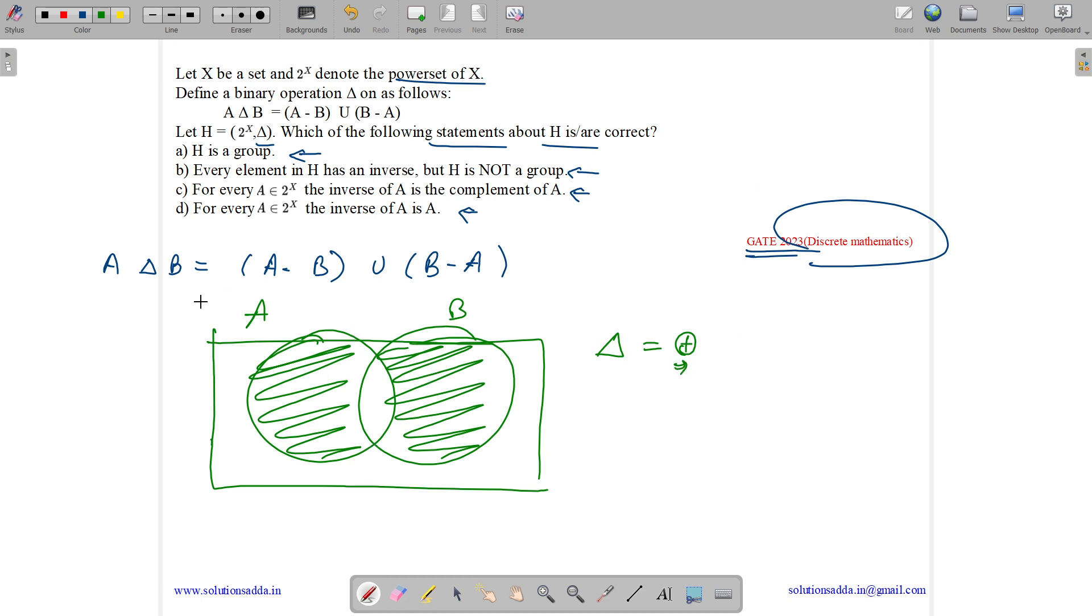We know XOR operation definitely satisfies closure. It will be closed for sure. So what is the meaning of closed? Which means if we are applying delta operation, then the result will also belong to 2 to the power X, which will for sure belong to 2 to the power X.